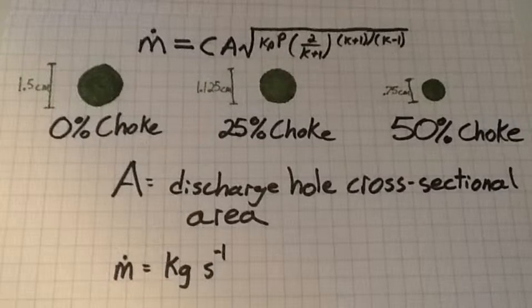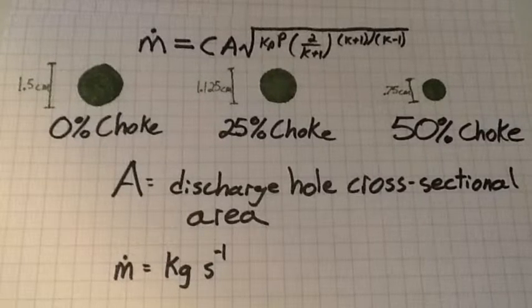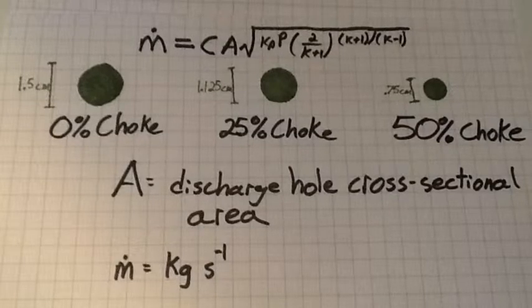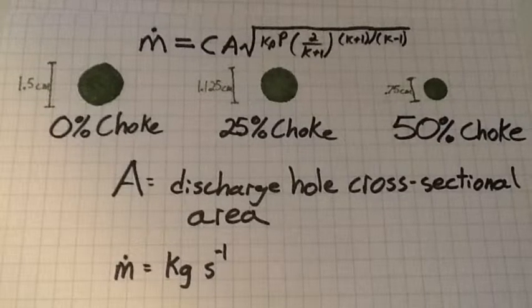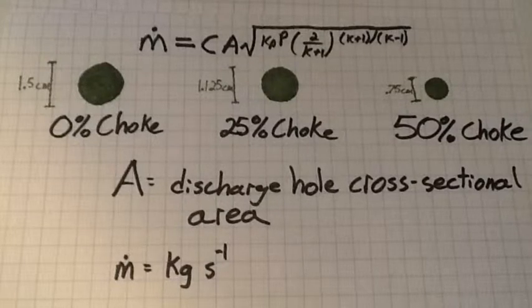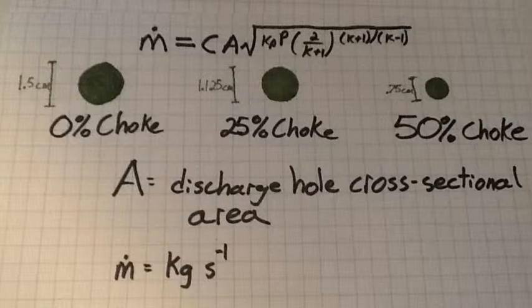The original diameter of the discharge point is 1.5 cm. At this point, there is 0% choke. To achieve 25% choke, a washer with diameter of 1.125 cm will be attached. This provides 25% choke.